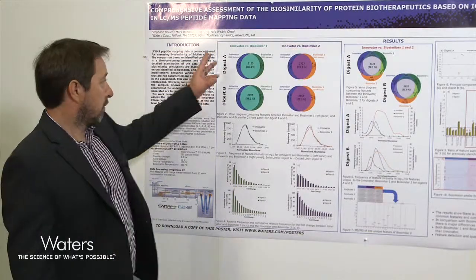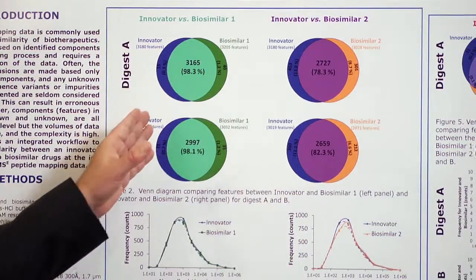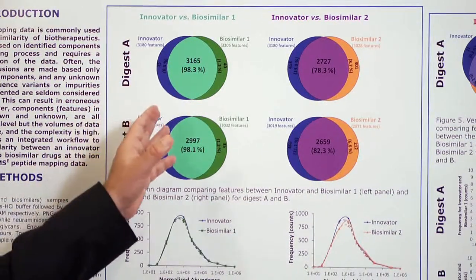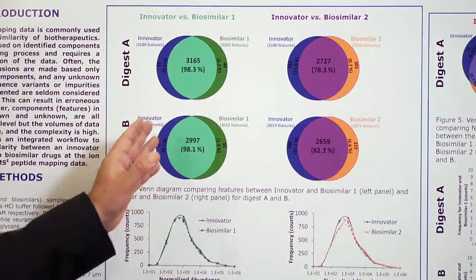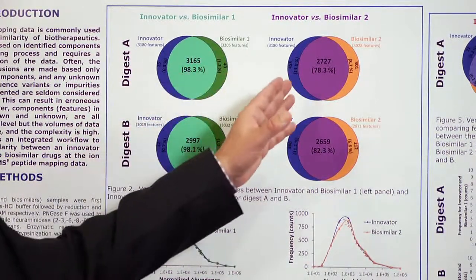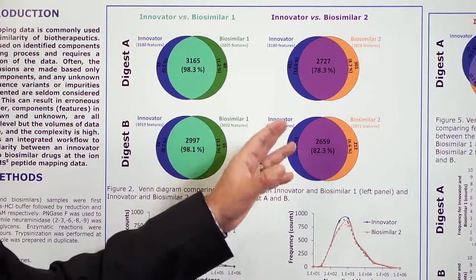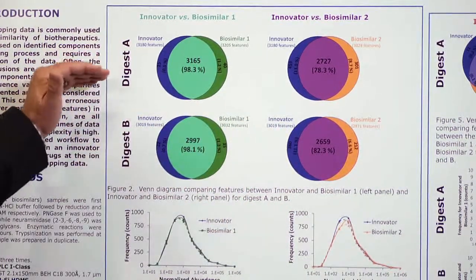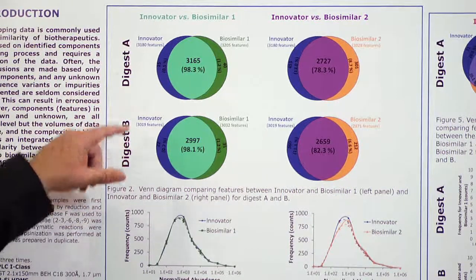For the results, on the left side I will compare the innovator versus biosimilar one, and on the right side I will compare the innovator versus biosimilar two. We have two digests: digest A and digest B.